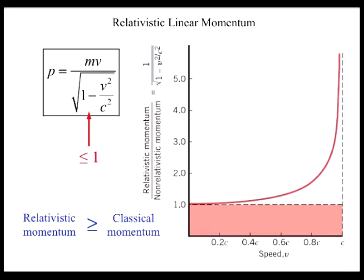The graph shows that for speeds attained by ordinary objects, such as cars and planes, the relativistic and non-relativistic momentum are almost equal because their ratio is nearly 1. Thus, at speeds much less than the speed of light, either the non-relativistic momentum or the relativistic momentum can be used to describe collisions.